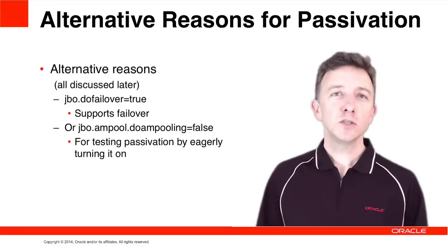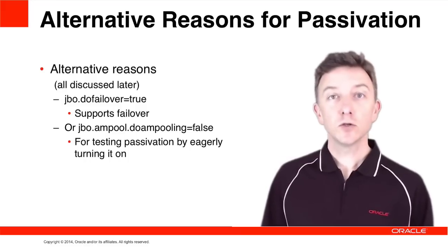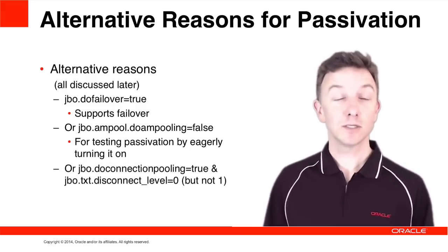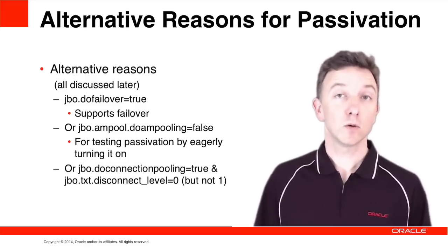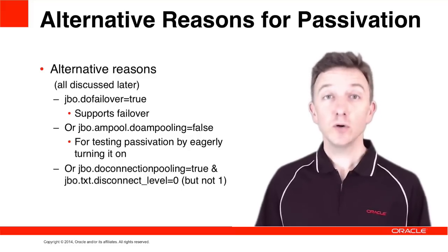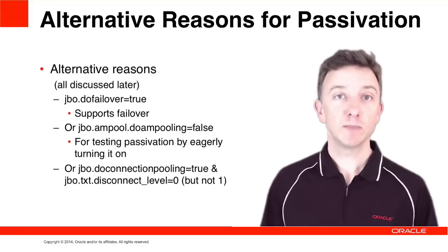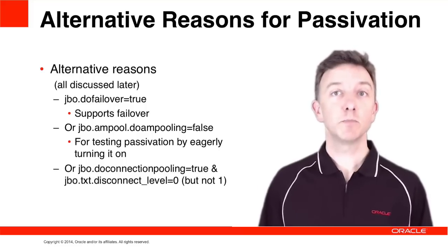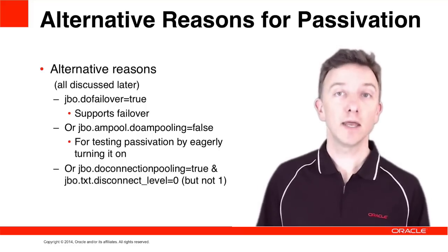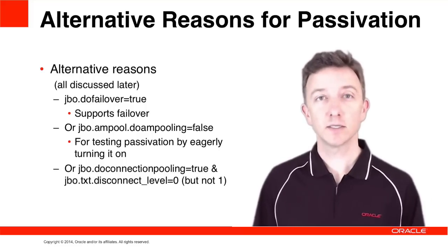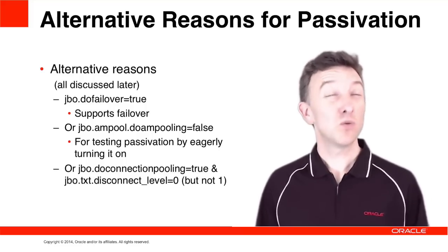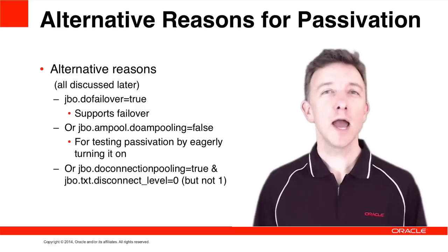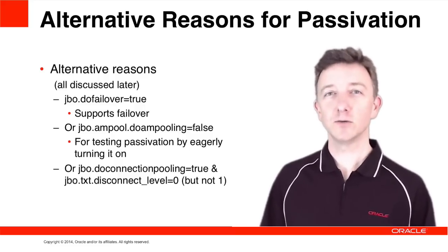Finally, the options jbo.do_connection_pooling and jbo.txn.disconnect_level set to true and zero respectively will result in active passivations upon the end of each request. However, these options are complex to explain right now and will be covered in a later episode.